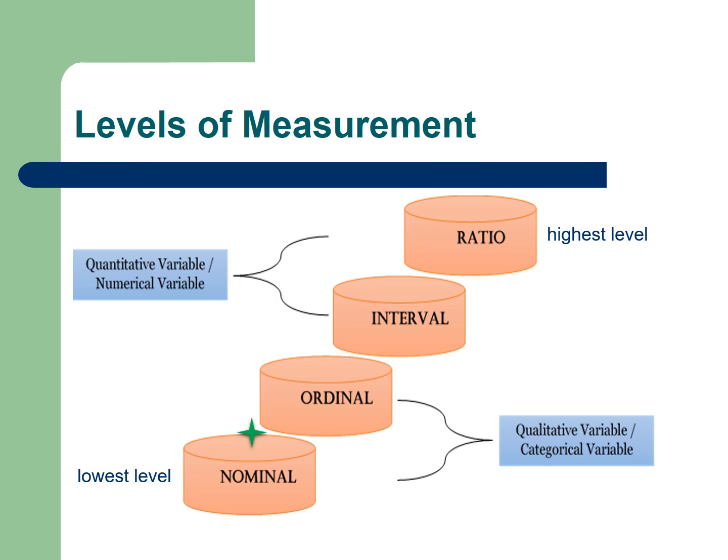Nominal is a categorical variable in which no order or ranking is imposed in the data. Example of this is the gender. You cannot say that a male is better than female or female is better than male.